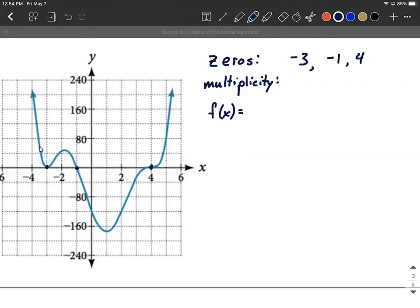On our first one here, as we come down, we touch and come back the same direction. That tells us this has to be an even multiplicity. We tend to go with the smallest numbers possible unless something's directing us a different direction. So I'm going to go with two, that's a nice even number.